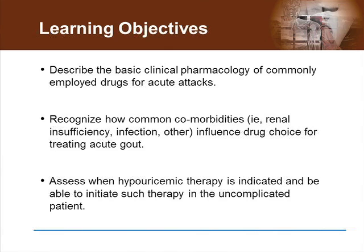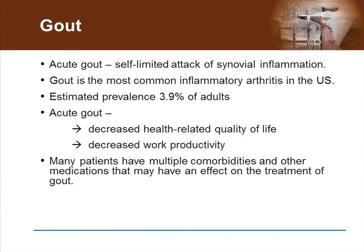During this talk, I will discuss several cases to illustrate some of the challenges associated with treating acute and chronic gout. Gout is a very common form of arthritis. It can be defined as a self-limited attack of synovial inflammation caused by an excess of body uric acid. Tissue deposition of monosodium urate crystals is the central feature and results in the clinical manifestations of synovitis, and it is the central feature that actually causes gout.